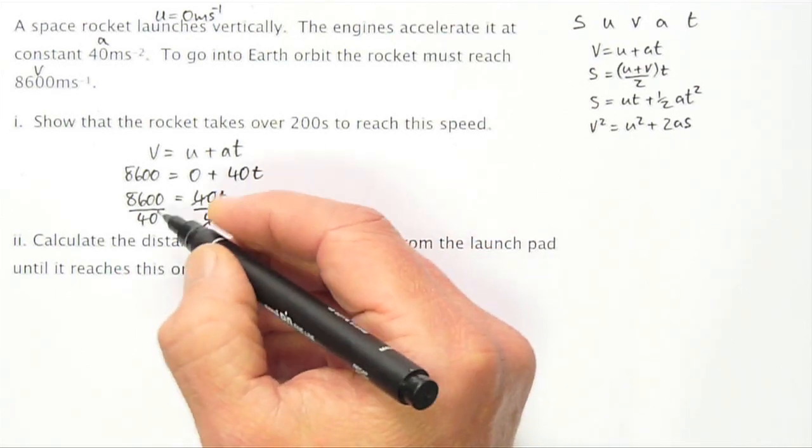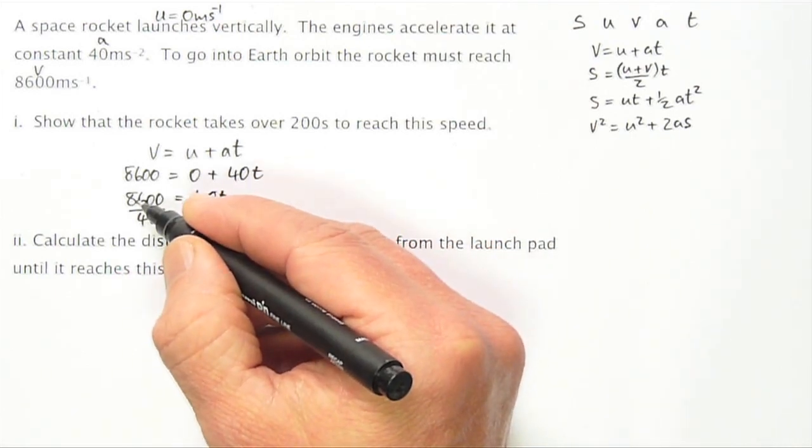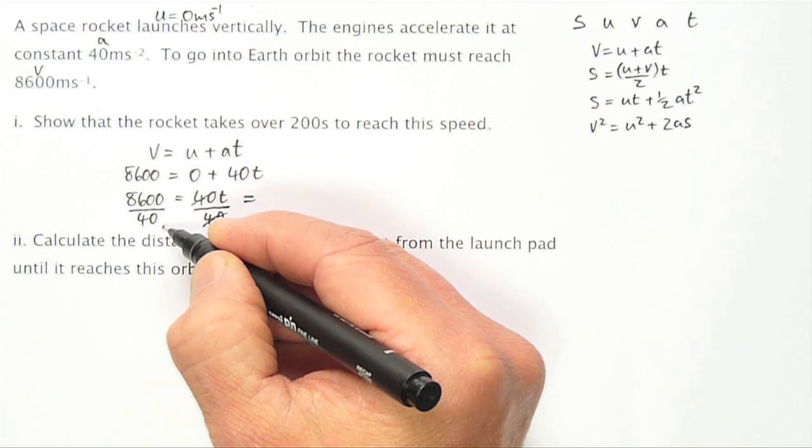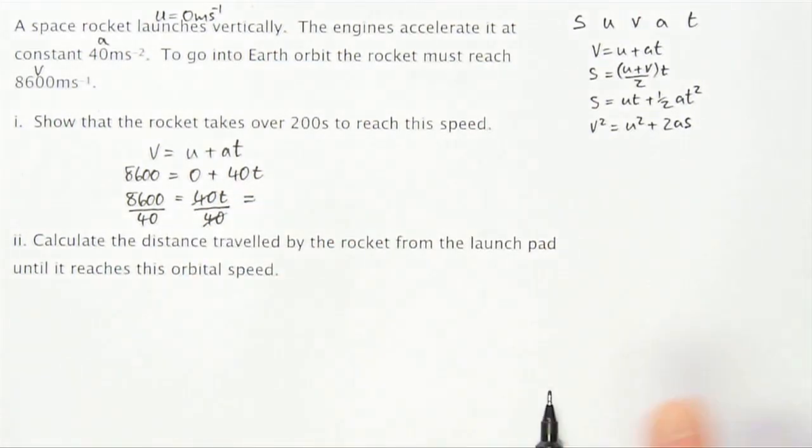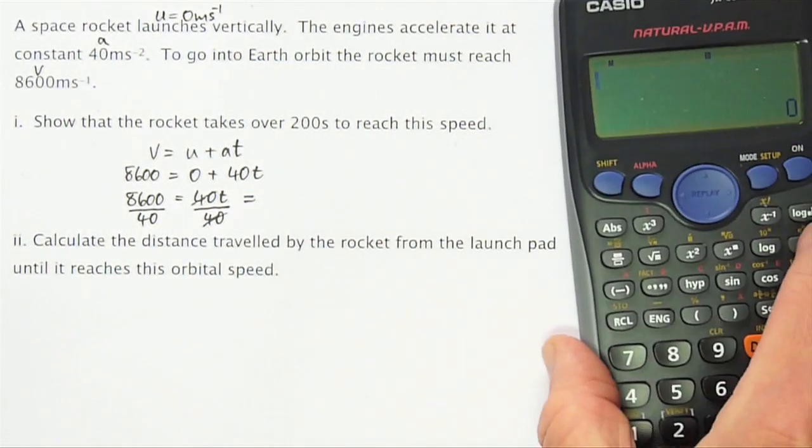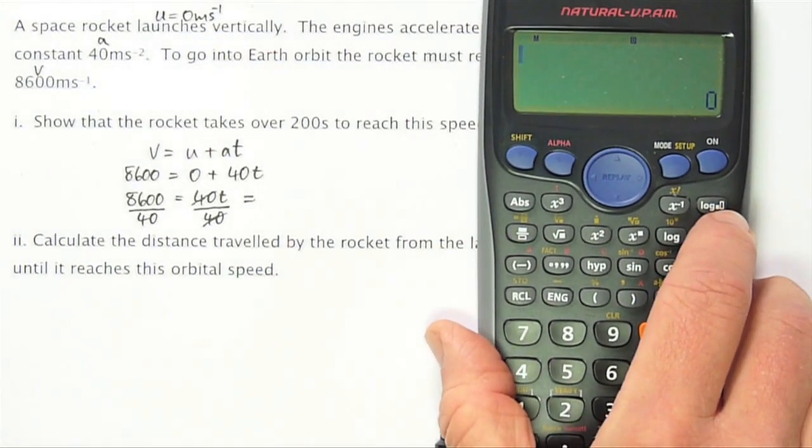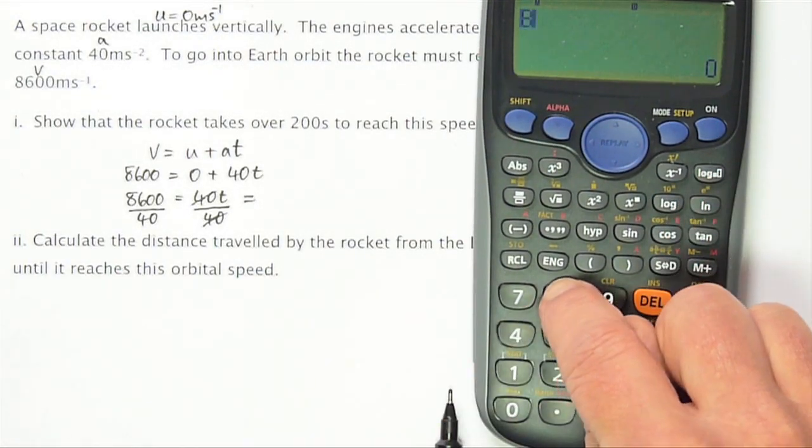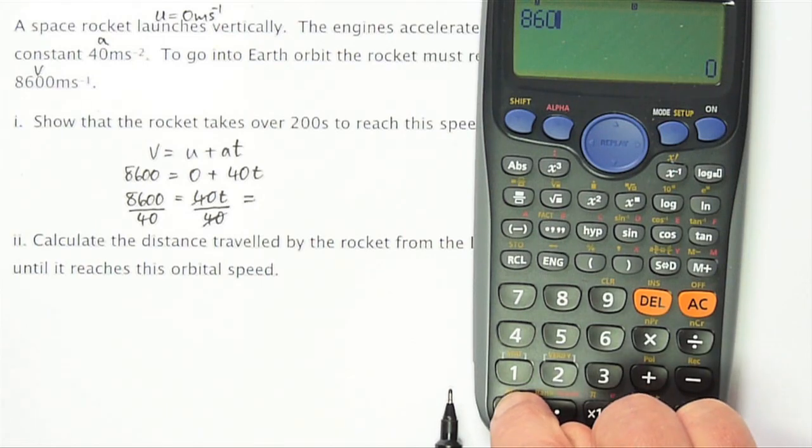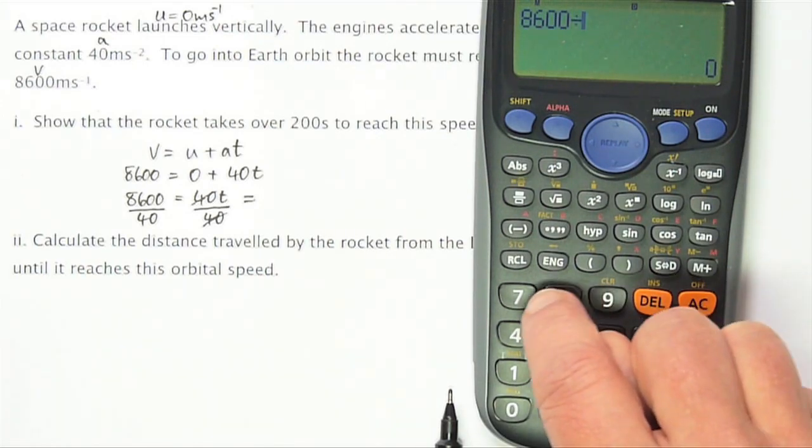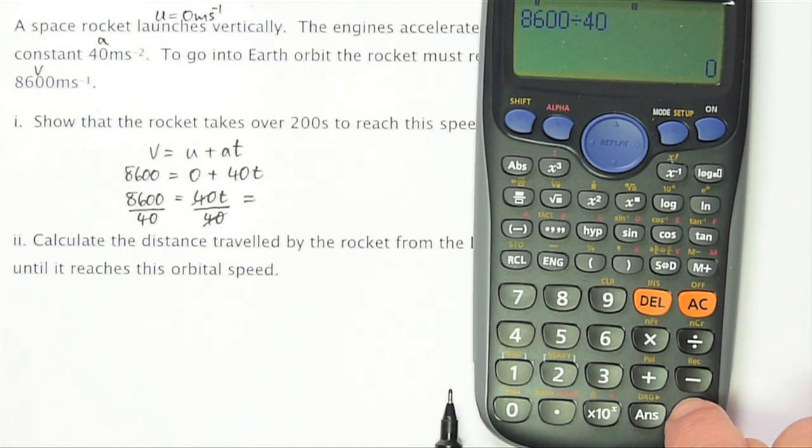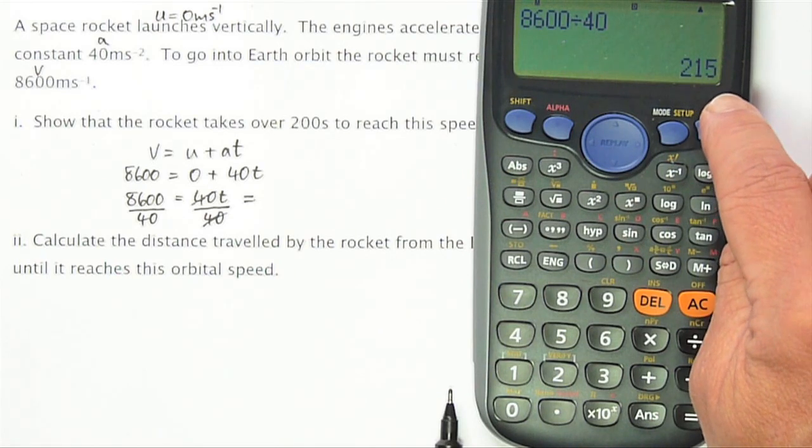So what I need to do is to calculate 8600 divided by 40. 8600 divided by 40. And the answer is 215.